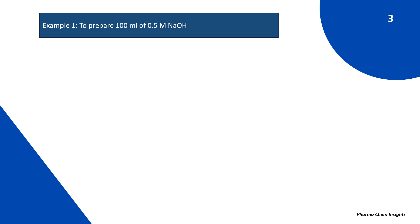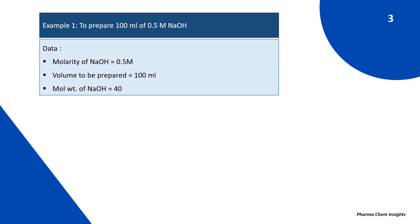Example 1: To prepare 100 ml of 0.5 molar NaOH. The data we have: molarity of NaOH is 0.5 molar, volume to be prepared is 100 ml, and molecular weight of NaOH is 40. This you can find on the label of the bottle being used to prepare.